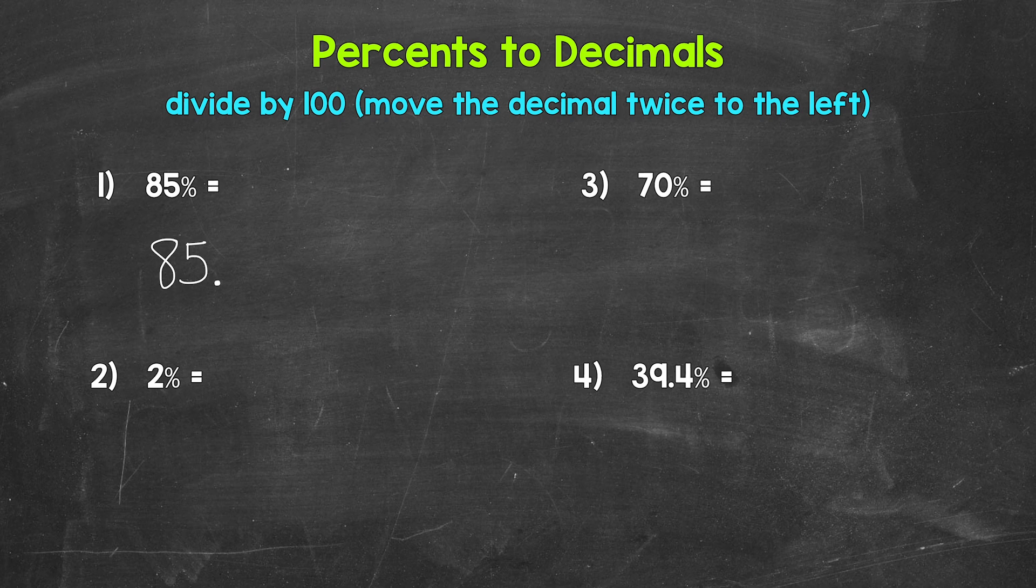So to divide by 100 here, let's move the decimal once, twice, to the left. That gives us 0.85, 85 hundredths. So 85% equals 0.85.